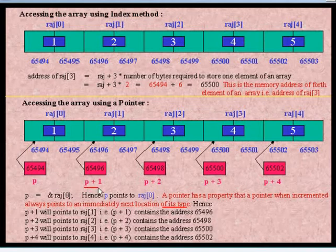Integers consume 2 bytes of memory, so 94 plus 2 equals 96. Hence, P+1 points here. Again, a pointer has the property that when incremented, it always points to the immediately next location of its type.